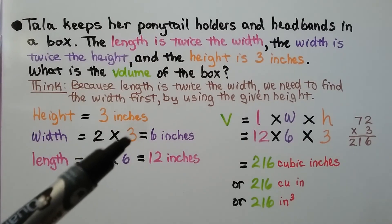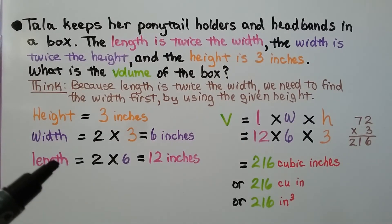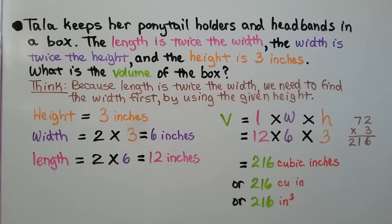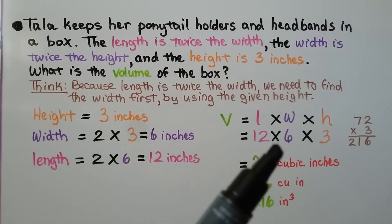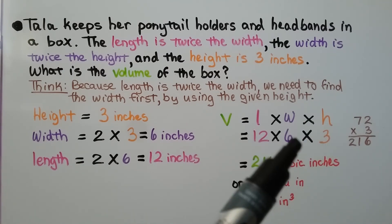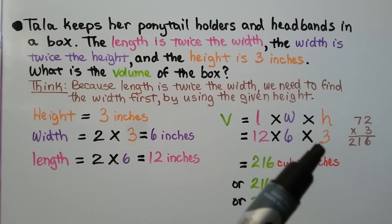Now we know the length is twice the width. If the width is 6 inches, the length is 2 times 6 inches. That's 12 inches. Now that we have our 3 dimensions, we can multiply 12 times 6, which is 72. Multiply that by the height, 3. We get 216.